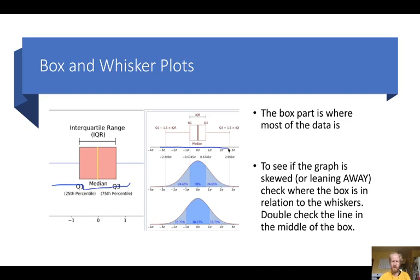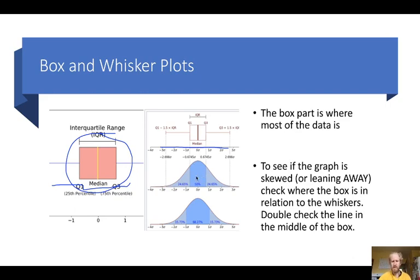It's a way to display the distribution — the shape of our data. Box and whisker plots look like these examples here. The box part is also called the interquartile range, meaning between the second and third quarters — that's where the majority of your data falls. The whiskers show where there's less data but data still exists out that far.